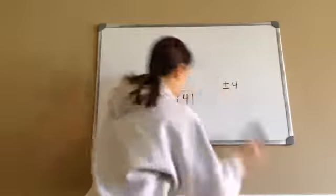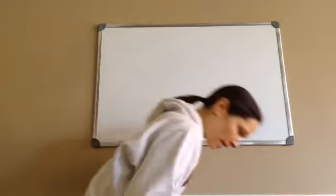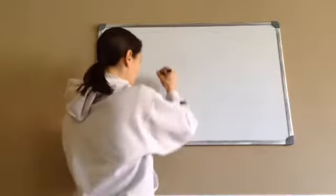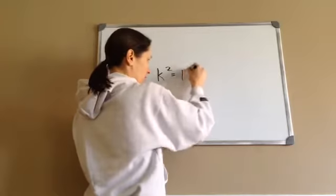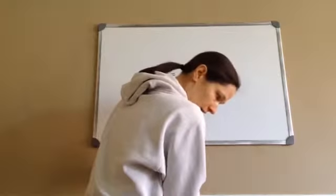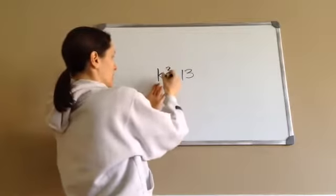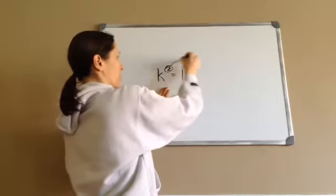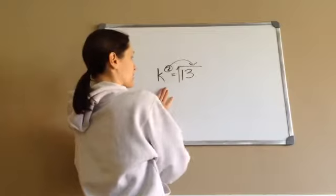Alright and then last one. Alright, here's what it says: K squared equals 13. Alright and then again we want to get K by itself. So this square comes about to equal, it makes the square root.